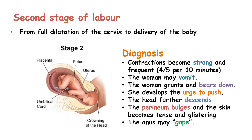The second stage of labour starts from full dilatation of the cervix to the delivery of the baby. We diagnose the second stage when we see: contractions which become strong and frequent — around 4 or 5 contractions in 10 minutes; the woman may vomit; the mother may grunt and bear down; she will develop the urge to push; the head of the fetus will descend further down the birth canal; the perineum bulges and the skin becomes tense and glistening; and there will be gaping of the anus.